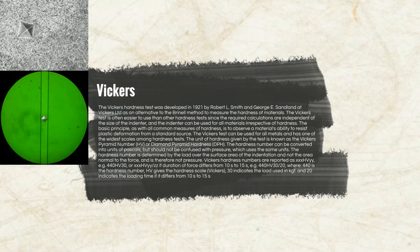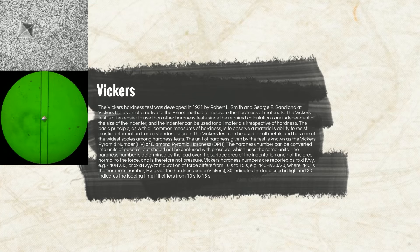The hardness number is determined by the load over the surface area of the indentation — not the area normal to the force — and therefore is not pressure. Vickers hardness numbers are reported as the number HV/30, or XXXHVYY/ZZ if the duration of force differs from 10–15 seconds. For example, 440HV30/20, where 440 is the hardness number, HV gives the hardness scale (Vickers), 30 indicates the load in kilogram-force, and 20 indicates the loading time if it differs from 10–15 seconds.